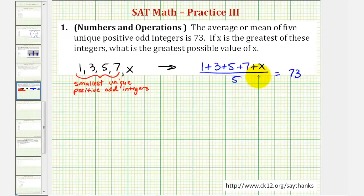Now if we solve this for x, we'll find the greatest possible value of x. One plus three plus five plus seven is 16, so we have 16 plus x divided by five equals 73.